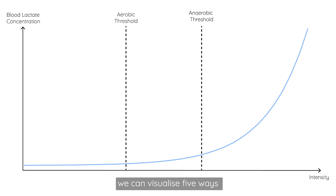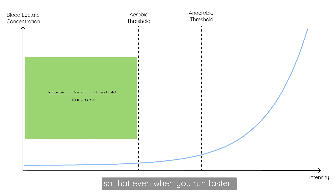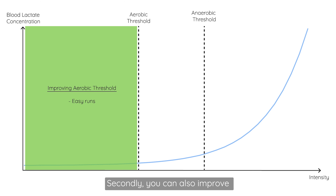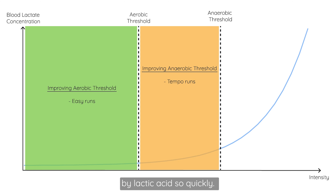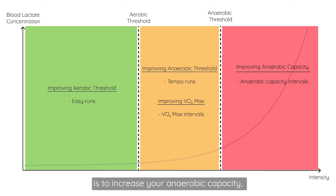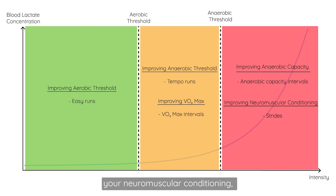From this graph, we can visualize 5 ways run workouts can help you improve your 2.4. The first way is to improve your aerobic threshold so that even when you run faster, you're still relying mostly on the aerobic energy system. Second, you can improve your anaerobic threshold so you won't be limited by lactic acid so quickly. Third, increase your VO2 max — the maximum oxygen your body can use. Fourth, increase your anaerobic capacity — how much energy you can produce without oxygen. Lastly, work on your neuromuscular conditioning to improve your finishing kick and running form.